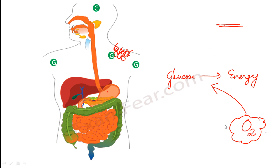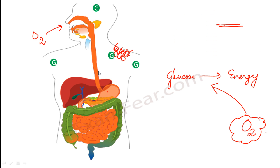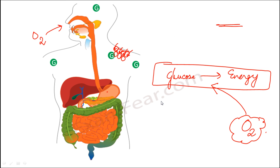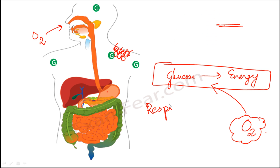So from where do we get this oxygen? This is what we breathe in. When we breathe in, the oxygen reaches our lungs and then gets distributed to each and every cell of our body. Once the cells receive the oxygen, this process is known as oxidation of glucose, which releases a lot of energy. This energy is then utilized by the cell for the various processes that take place inside it.